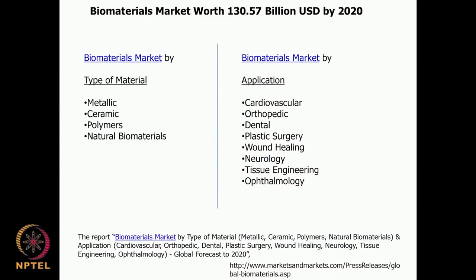Looking at the biomaterial market: it is estimated that by year 2020 it could reach 130 billion US dollars. The market is divided by type of material — metallic materials like titanium, stainless steel, chromium, and nickel; ceramic materials like hydroxyapatite, calcium sulphate, and oxides; polymeric materials like polymethyl methacrylate, polyethyl ketone, polylactic acid, and glycolic acid; and natural biomaterials like glucan, cyclodextrin, hyaluronic acid, and chitosan.